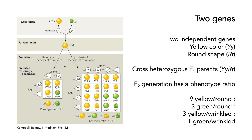If you have two independent genes — a yellow colour gene (capital Y) and a round shape gene (capital R) — and you cross a heterozygous F1 parent with capital Y, lowercase y, capital R, lowercase r, then in the F2 generation you get a phenotype ratio of nine yellow and round, three green and round, three yellow and wrinkled, and only one green and wrinkled, as shown in the Punnett square diagram.